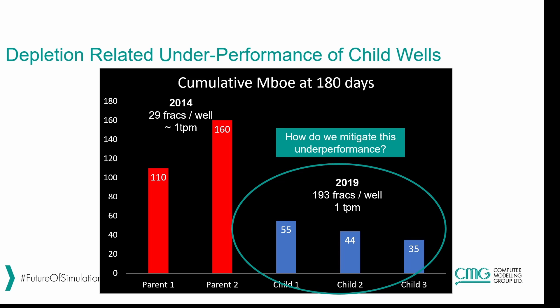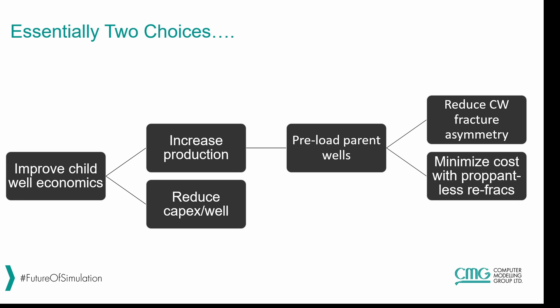We essentially have two choices. The first is to reduce the capital expenses per well. But since we want to maximize NPV and increase production as much as possible, we're going to take the upper path: preloading the parent wells. There are different techniques for doing this, but essentially by preloading these wells we're going to try to create a stress barrier to reduce the potential of frack hits. We'll be talking about the different strategies for preloading during this case study.